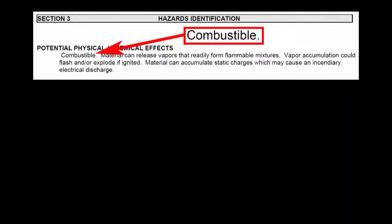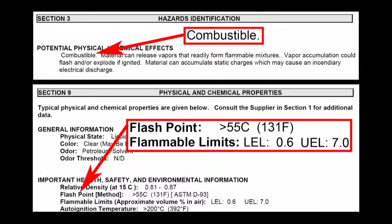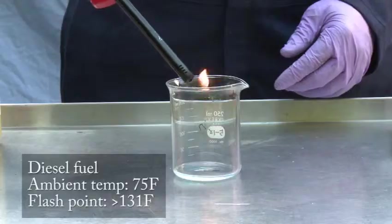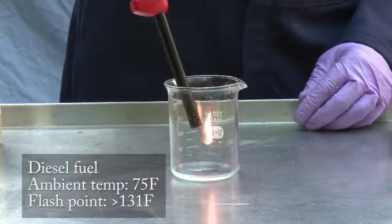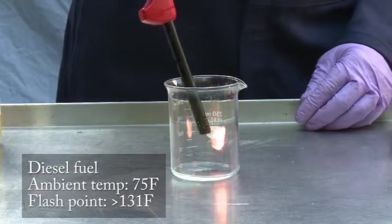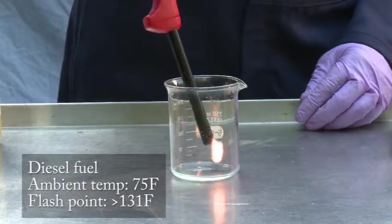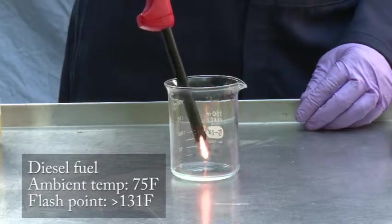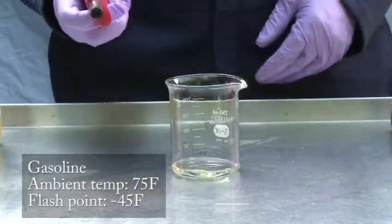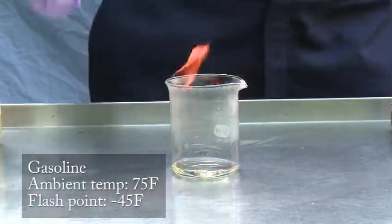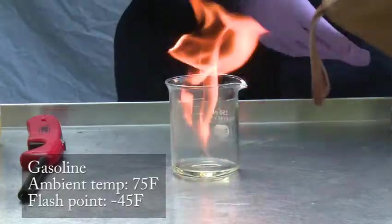We learned in sections 5 and 9 that diesel fuel possesses the hazardous characteristic of a combustible liquid. This hazardous characteristic will present itself under the following conditions: at a temperature above 131 degrees Fahrenheit — its flash point — and when the vapor-air mix is between 0.6% to 7%, the flammability range. So if the ambient temperature remains below 131 degrees Fahrenheit, the concentration of vapors above the liquid fuel is not sufficient to ignite even if a source of ignition is present. Compare this with gasoline, with a flash point of negative 45 degrees Fahrenheit — since the flash point of gasoline is well below ambient temperature, it immediately catches fire.